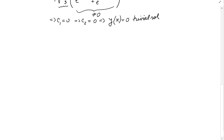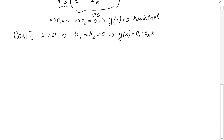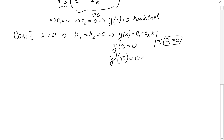Case 2: λ = 0. When λ = 0, r₁ = r₂ = 0, so y(x) = c₁ + c₂x. The condition y(0) = 0 gives c₁ = 0. Then y'(x) = c₂, and y'(π) = 0 means c₂ = 0. Again, only the trivial solution.